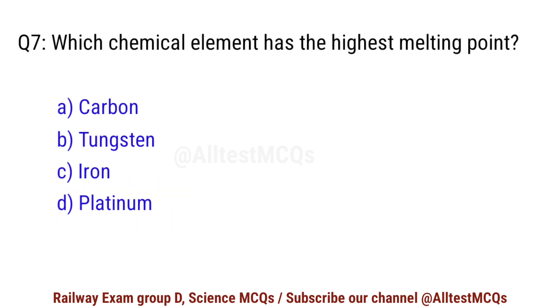Question No. 7. Which chemical element has the highest melting point? Correct option is B. Tungsten.